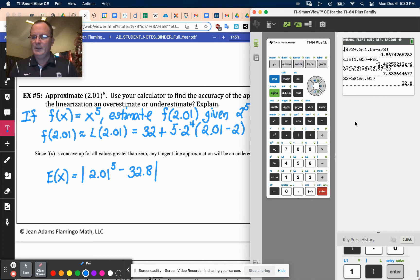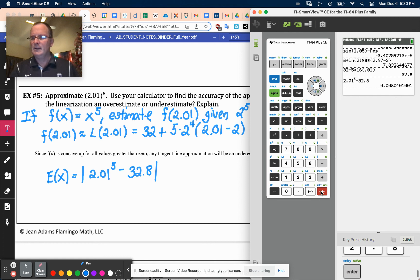So let's go over here, and it's just going to be the absolute value of that, so I'll just make it positive if it's negative. And we said that the approximation was an underestimate, so it shouldn't be. Minus 32.8.